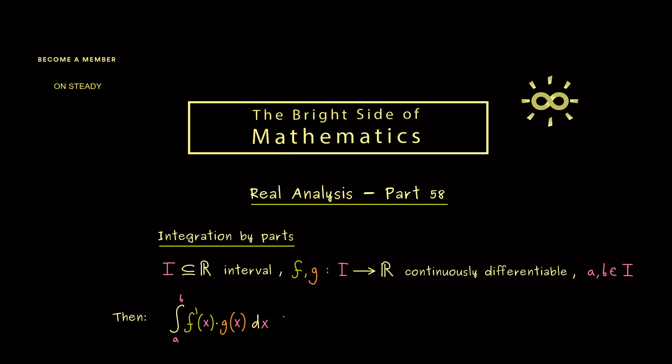Now the integration by parts formula tells us that we can split this integral into two parts. The first part is just the function f times the function g. More precisely, we put in the upper limit b and subtract the number that comes out when we put in the lower limit a. This was the short notation for this calculation.